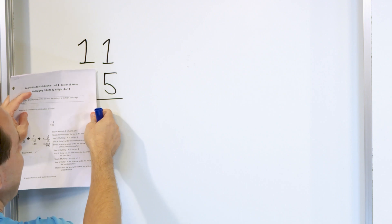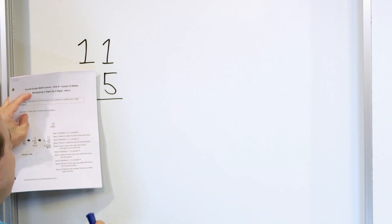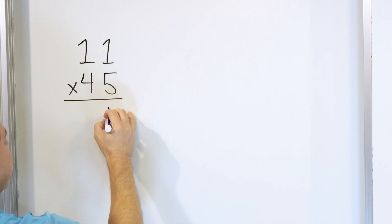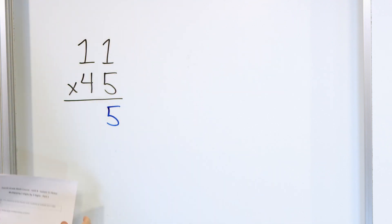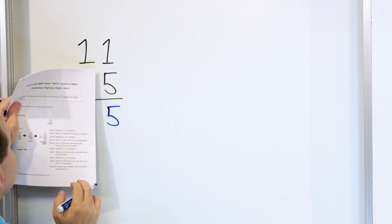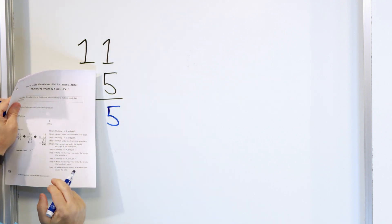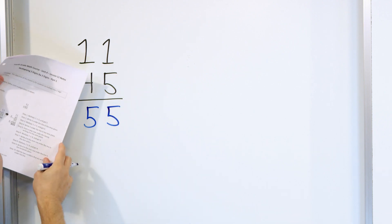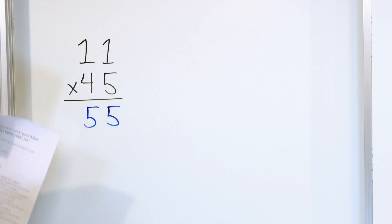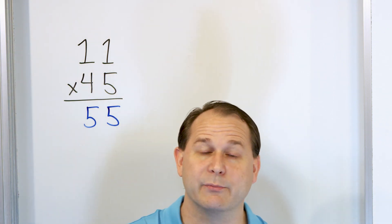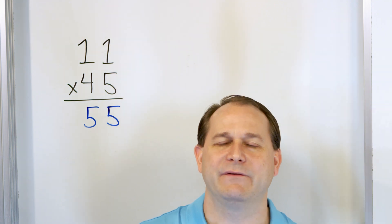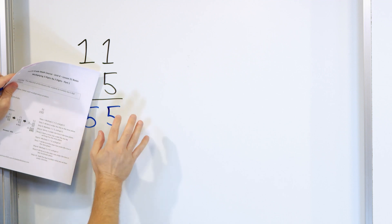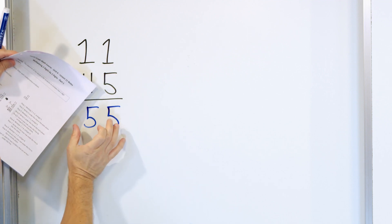So you pretend that this 4 is just not here — it doesn't even exist. We say 5 times 1 is 5, and that goes right down lined up in this column. Pretend the 4 is not there. Now we say 5 times this 1 again is 5, so that goes in this column. If the problem were just 11 times 5, the answer would be 55 — and we know that from our multiplication tables. So the first step is to pretend that the tens digit doesn't even exist and just write the numbers down after you multiply them.